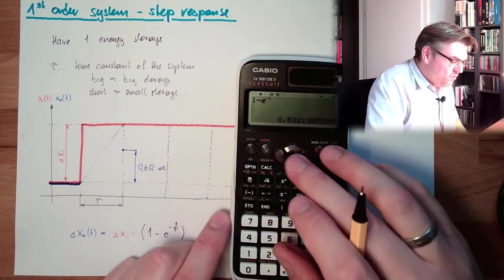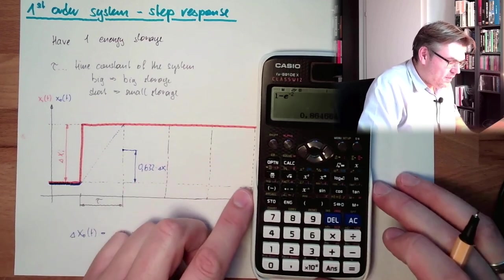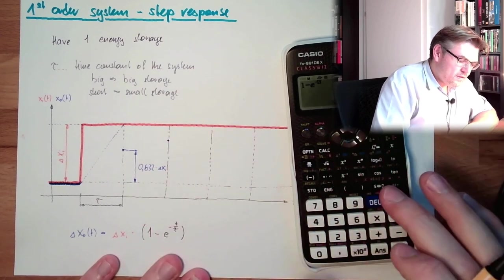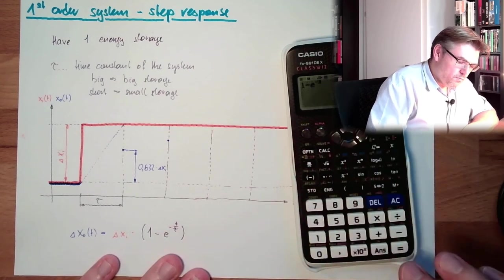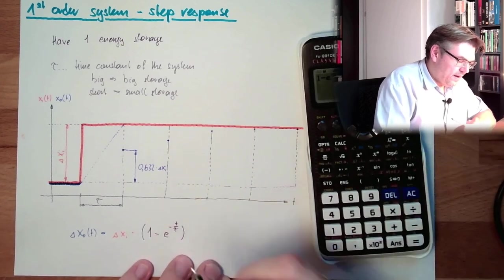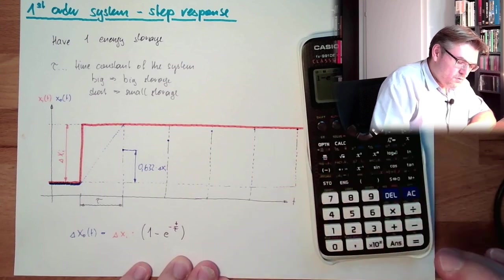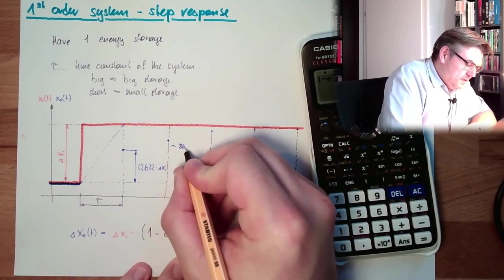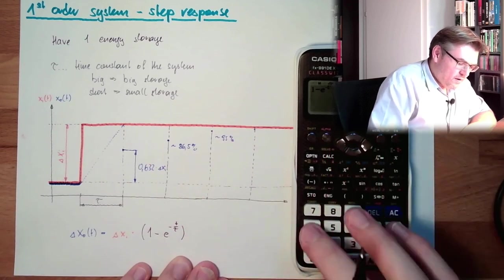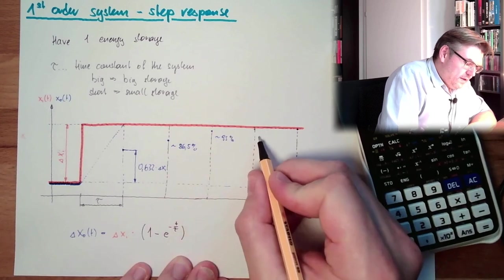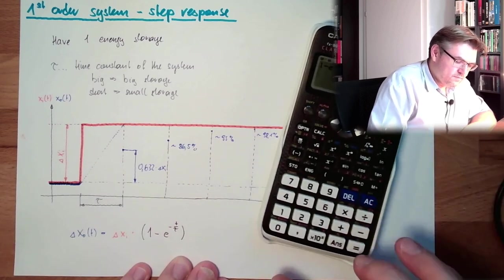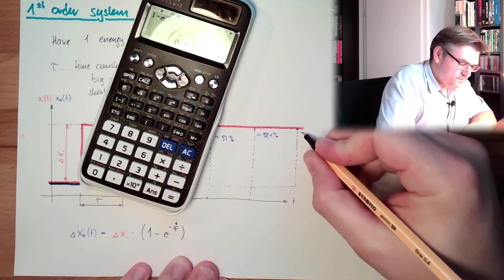What is the case after 2 tau's, after 2 times the time constant? 86. 3, it's around 95%. So, here, what have I said, 2 is around 86.5%, here we have around 95%, here we have 98.1%, 99.2%, and after 5 tau, we are at 99.2%, 99.3%, so we are there.